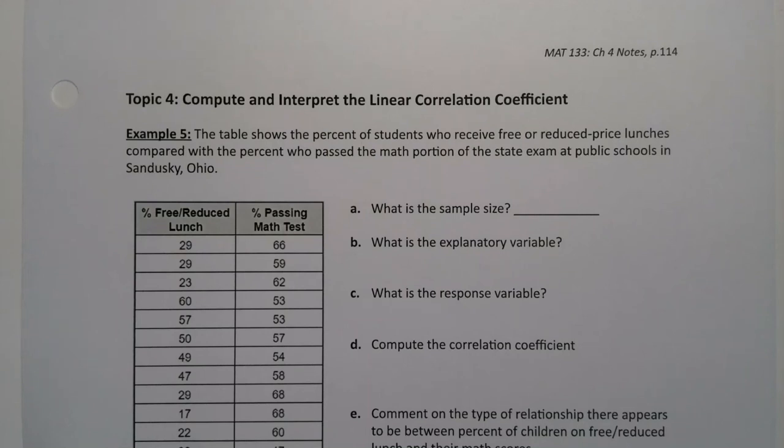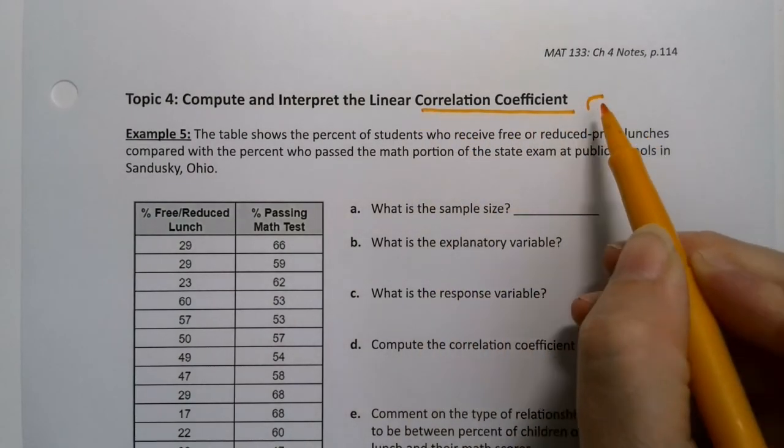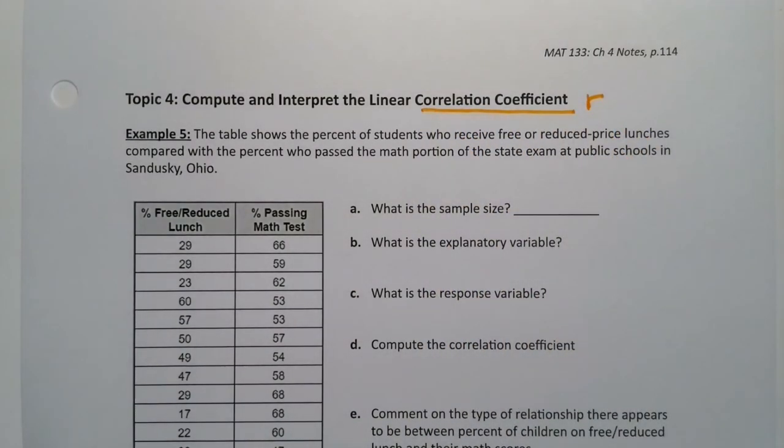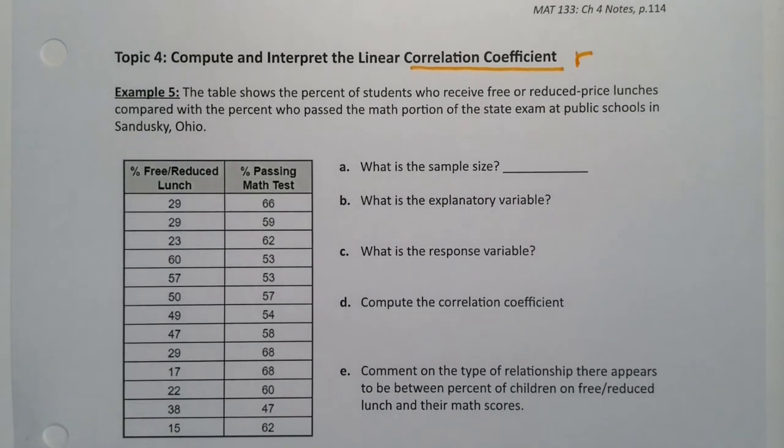We saw how powerful the correlation coefficient r was in that it was able to tell us a whole bunch of information. It's able to tell us strength and direction. So we're going to have to be able to find this number. The answer is yes, but we're not going to do it by hand because that formula just looked atrocious. So we are going to use a computer or a calculator to do it.